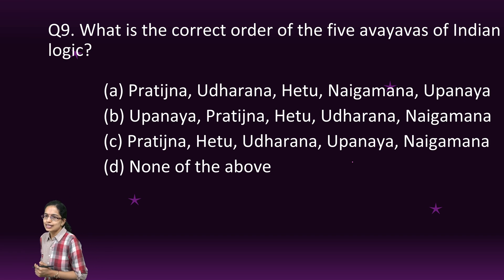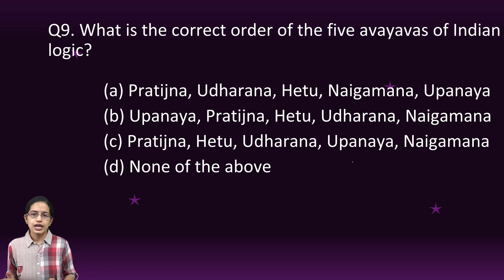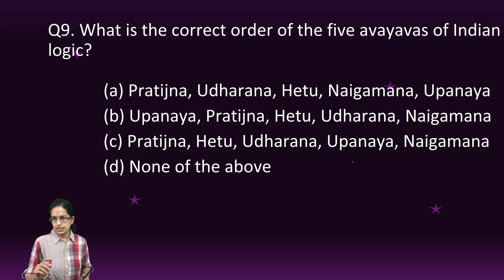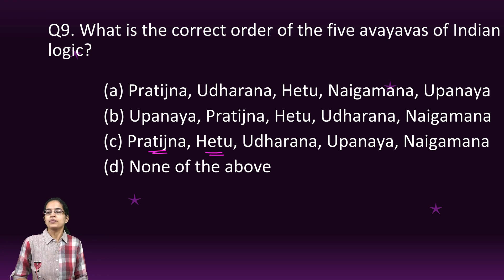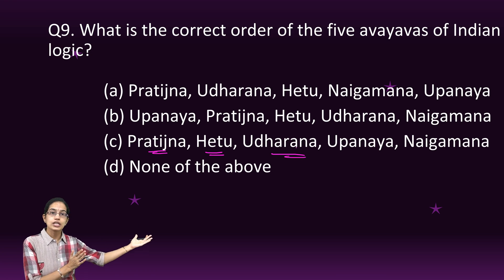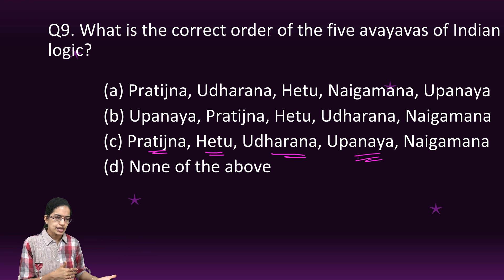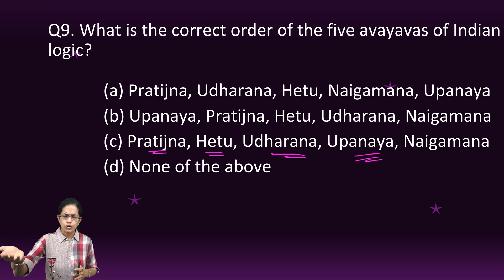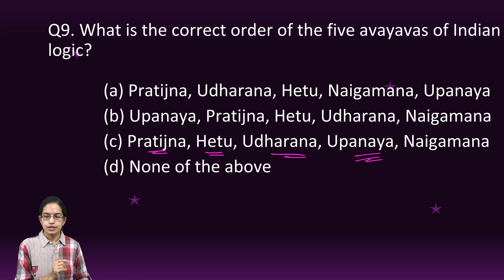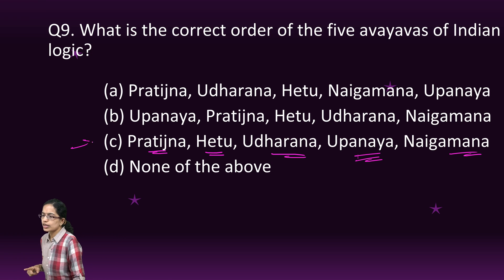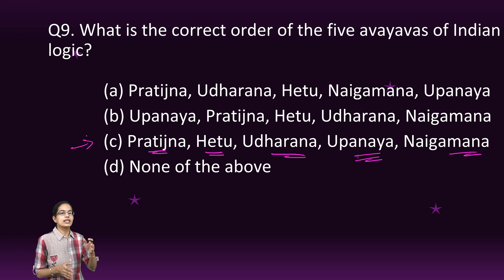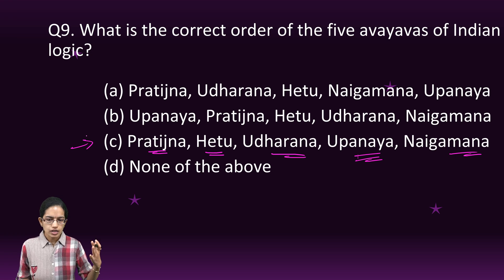The correct order of the five avayavas of Indian logic: First is Pratinja — the proposition, such as 'hill has fire.' Hetu is the reason — 'because it has smoke on the hill.' Udharana is an example — relating it to the kitchen hearth. Upanaya is the application — 'the smoke on the hill is associated with fire.' And Nigama is the conclusion — 'that hill definitely has fire.' So you state a proposition, give a reason, provide an example, apply it, and finally draw a conclusion.